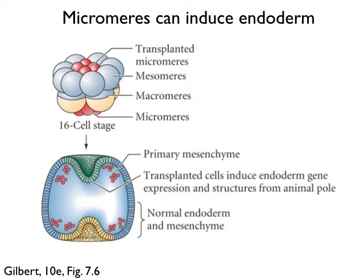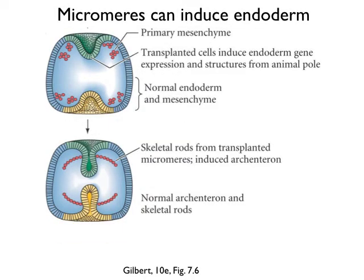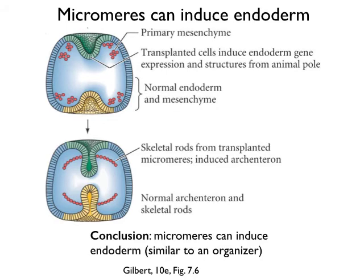The conclusion from this experiment is that micromeres can induce endoderm in cells that don't normally make it — they act like a Spemann organizer equivalent in a sea urchin. Moreover, once an archenteron forms, additional signaling occurs to adjacent ectoderm, supporting the formation of an additional set of skeletal rods by mesodermal cells that somehow respond to information in the ectoderm.